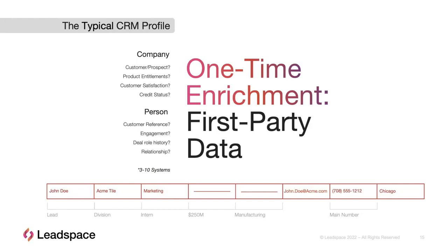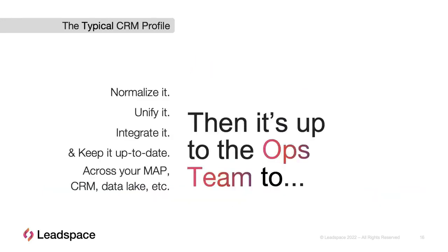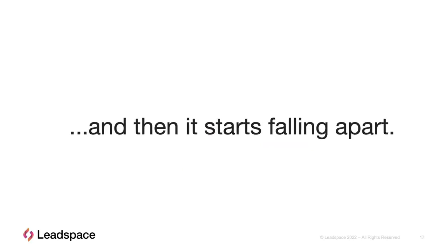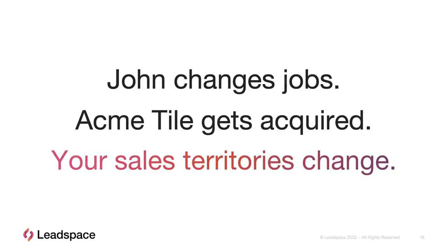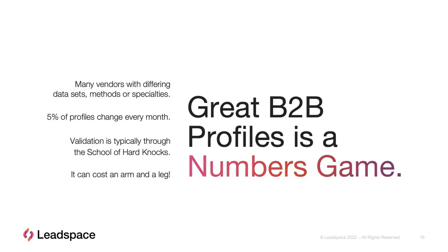People move and change, so what the information is today might not be the same tomorrow. Once you get it working, you throw it to the ops team and they've got to keep it going — normalizing the data, keeping it unified, integrated, and up to date across all your systems. This is where it gets really hard, especially if you're trying to do it on your own. You've got people changing jobs, companies being acquired, sales territories changing, responsibilities for accounts changing. Basically it all falls apart.